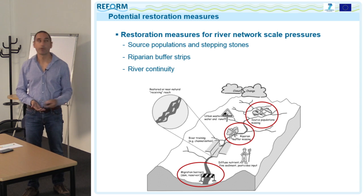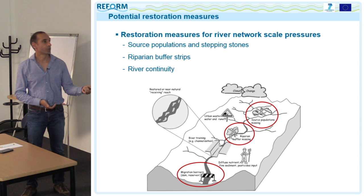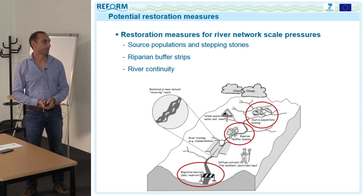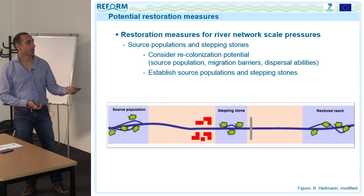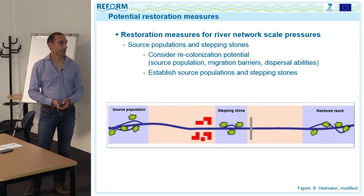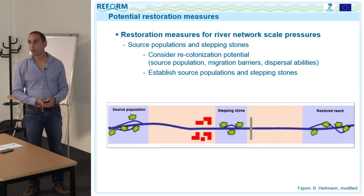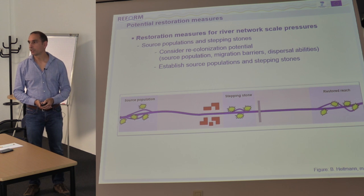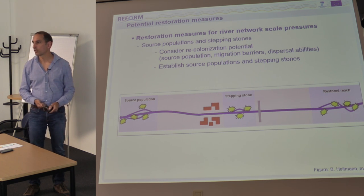At the river network scale, I focus on three pressures and associated measures: source populations, riparian buffer strips, and river continuity. Source populations are important for restored reaches because you can restore habitats but also need individuals and species to colonise them. Based on knowledge of source populations, migration barriers, and dispersal abilities, you can assess if species can potentially recolonise restored habitats. If source populations are not nearby, you can establish new ones and create stepping stones in your catchment.